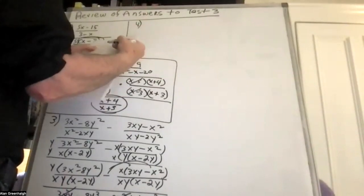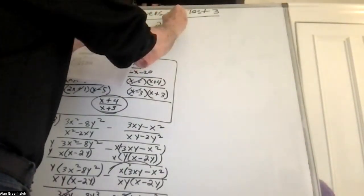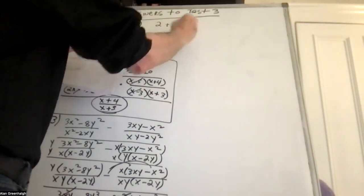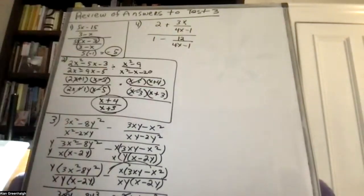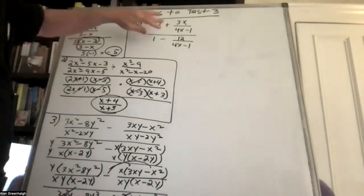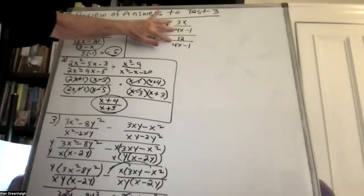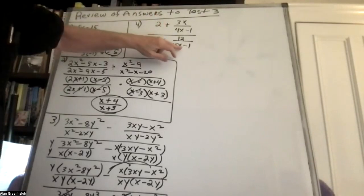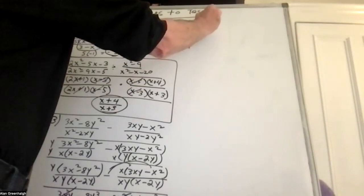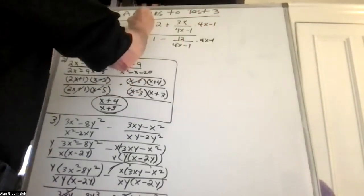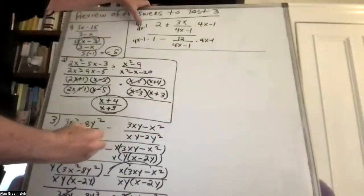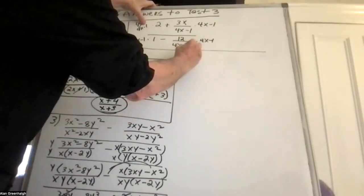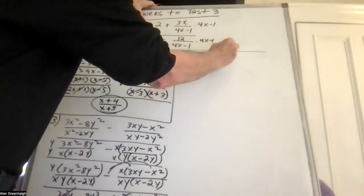Here's problem number 4: 2 plus 3x over 4x minus 1, divided by 1 minus 12 over 4x minus 1. Again, you're looking for the least common multiple — not the least common denominator — because we're not combining these two fractions, but we want to get rid of these two denominators. So you're going to multiply everything by 4x minus 1.